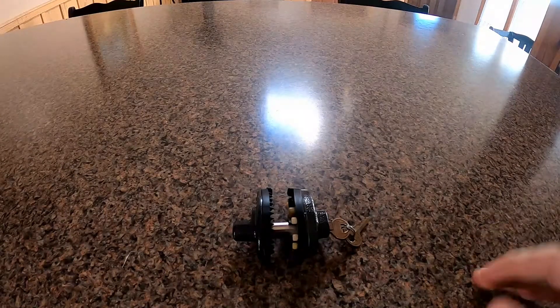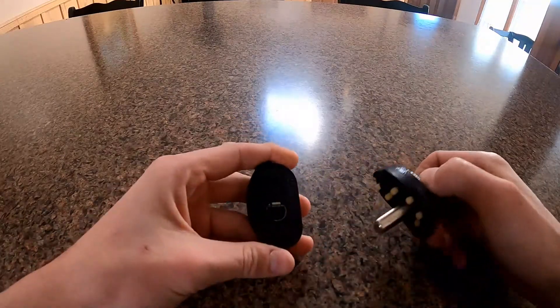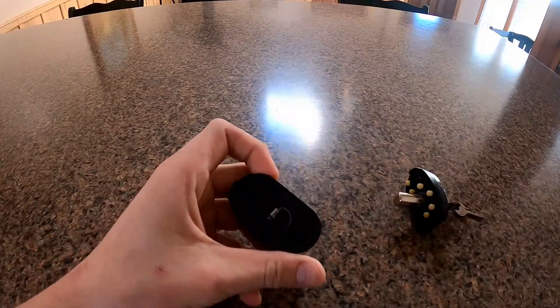The way this operates is that it has a ratchet post that goes through the trigger assembly into the other side with a locking paw on it.